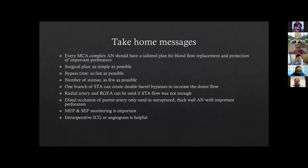Take-home message: every complex MCA aneurysm should have a tailored plan for blood flow replacement and protection of the important perforators. The surgical plan should be as simple as possible, bypass time as fast as possible, and the number of anastomoses as few as possible. One branch of STA can create a double barrel bypass to increase donor flow. Radial artery and right GEA can be used if STA flow is not enough. Distal occlusion of the parent artery should only be used in unruptured thick-wall aneurysms with important perforators. MEP and SSEP monitoring is of utmost importance. Intraoperative ICG or angiogram is very helpful.